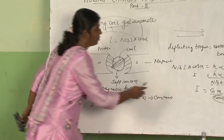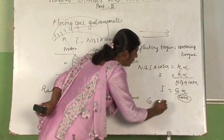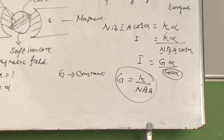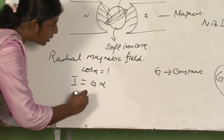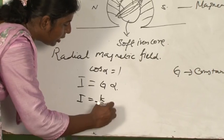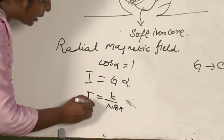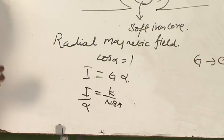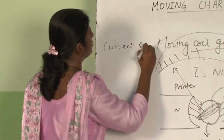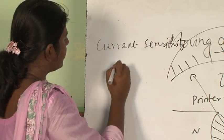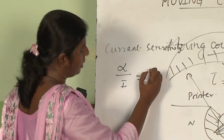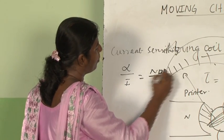G can be written as K divided by N into B into A. This G is your galvanometer constant. If you rearrange, I by alpha is equal to NBA divided by K. This I by alpha is called current sensitivity. Current sensitivity is alpha by I, and from the formula you get alpha by I equal to NBA upon K.